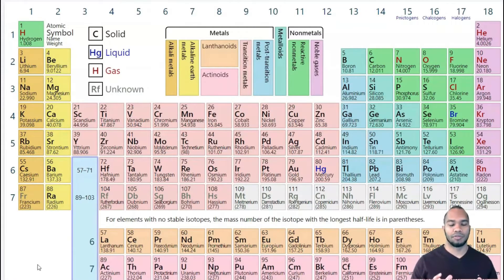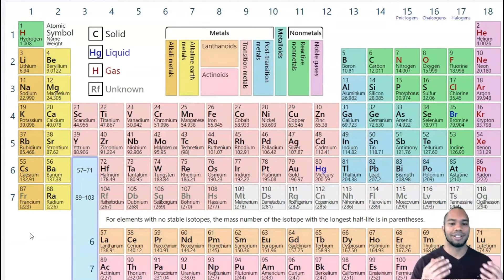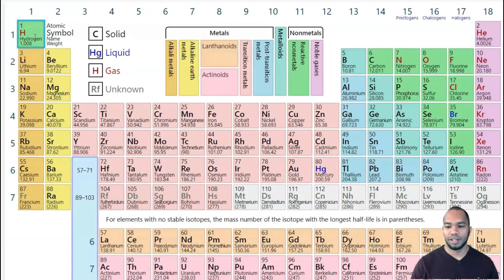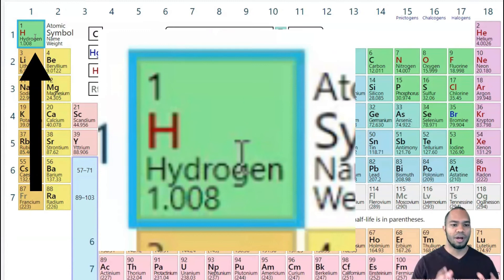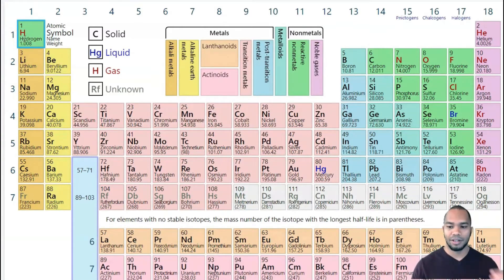This is the periodic table of elements. When you first take a look at the table, it can look overwhelming. But the thing you've got to realize is that it's organized to be easy to understand. The periodic table is organized by the number of protons, and another way of saying protons is atomic number. So when you look at the periodic table, it's organized by atomic number.